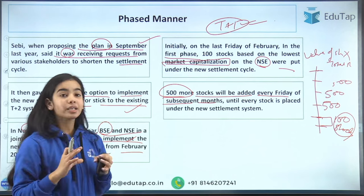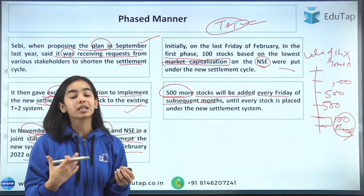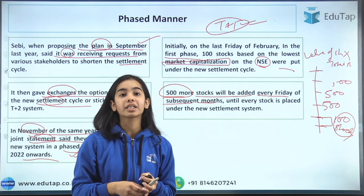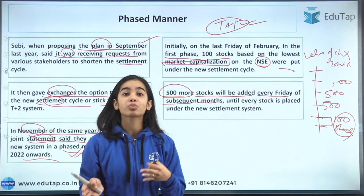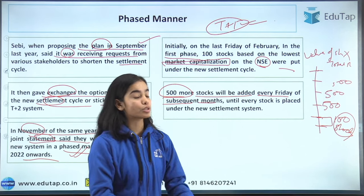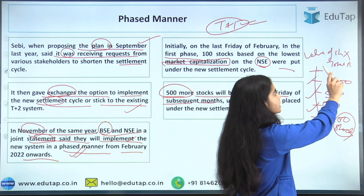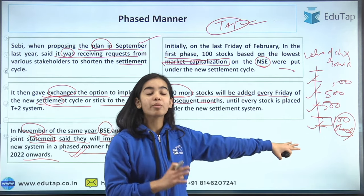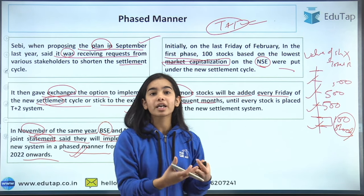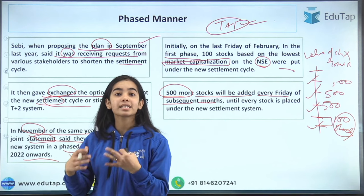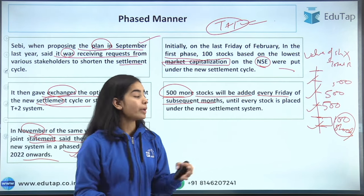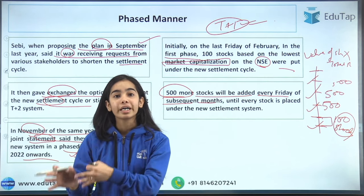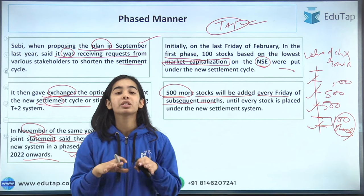The reason it has been brought in a phased manner is that the process of implementing T plus one is challenging for NSE and BSE — liquidity will expand, there will be more trading, and trades have to be settled faster. That's why they said they will slowly bring this process into the market so that too much liquidity doesn't come in all at once. Starting with low-market-cap stocks makes it easier to handle, allowing NSE, BSE, investors, and regulators to become comfortable with the new cycle.